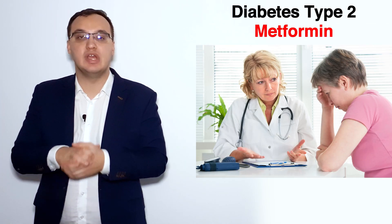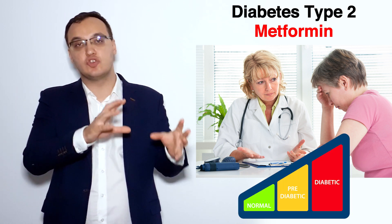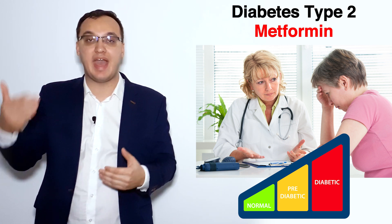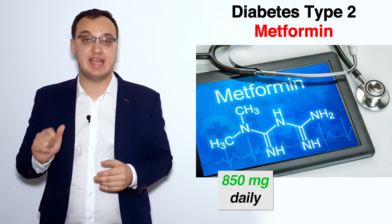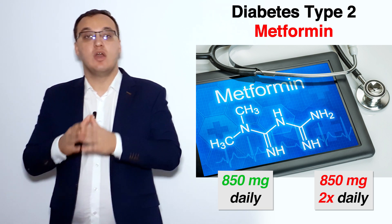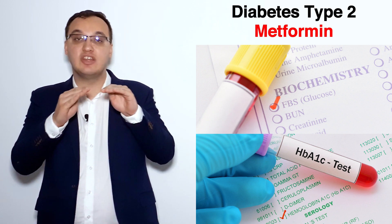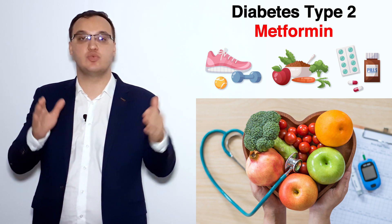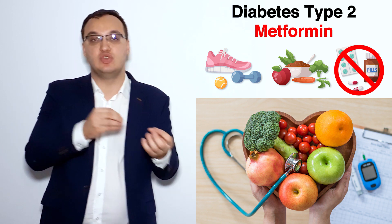What can we do if the patient tries all these things and it doesn't work — meaning we see that pre-diabetes is progressing into diabetes? Then we have a pre-diabetic patient with failure of lifestyle modification, and we need to add metformin. Metformin is a very good medication that can be given at 850 mg once daily, and if necessary, we can go to twice daily. We always check the lab values to ensure we are going in the right direction with both lifestyle modifications and metformin.